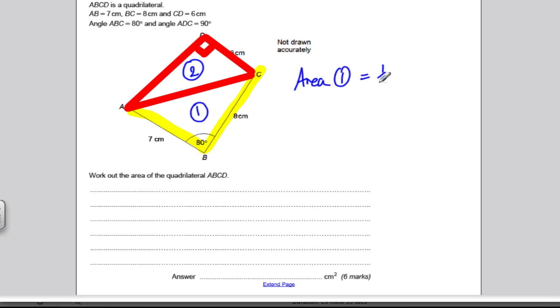So the area of 1, we use a half AB sine C. Now remember what that means. It means a half times the two sides you know, so times 7 times 8, times sine of the angle in between, so times sine of 80. You tap that in your calculator, 0.5 times 7, times 8, times sine 80, and you get 27.57 centimeters squared.